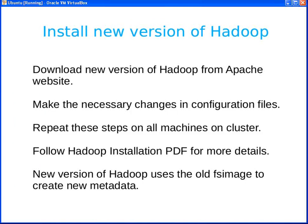The next step is to install the new version of Hadoop. Just like with the original installation, download the tar file, extract its contents, and make the required changes in the configuration files. Repeat these steps on all machines in the cluster. You can use the SCP (source copy) command to copy the complete Hadoop setup from the master machine to all slave machines. Follow the Hadoop installation guide for more details.